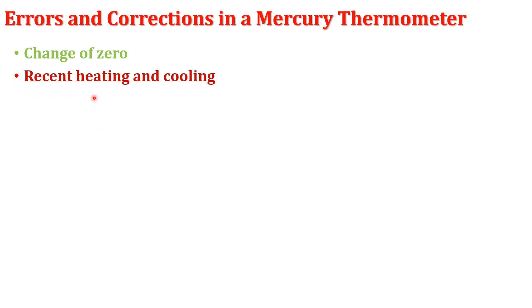The second error arises from rapid heating and cooling. When a thermometer is used to measure very high temperature, the thermometer bulb expands, but if it is immediately used to measure low temperature, the mercury level will be lower than the correct reading. To avoid this error, we use two different thermometers — one for measuring high temperatures and one for low temperatures.